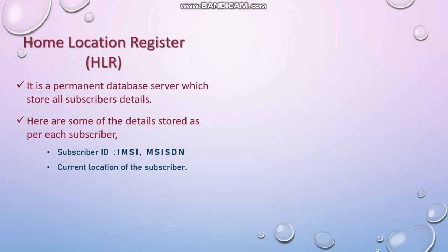HLR has records of the services you have subscribed to. It helps to authenticate the mobile when it tries to attach to the network just after power on. Missed call alerts are stored when you are currently not available in the mobile network, and you get alerts when you attach to the network again.